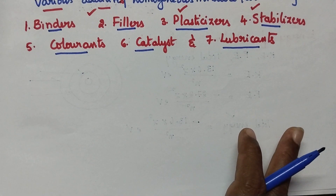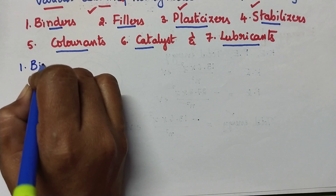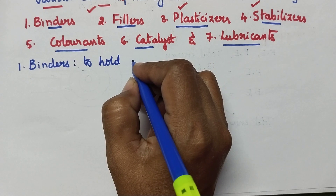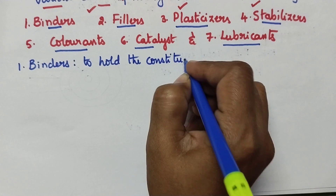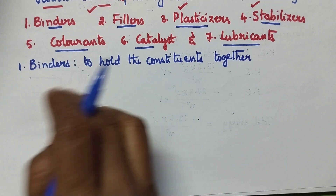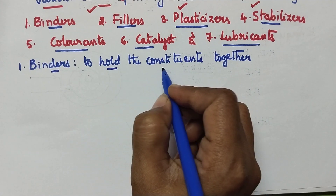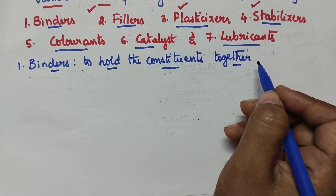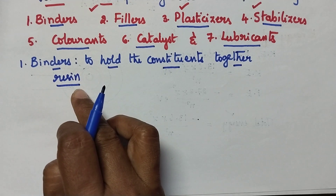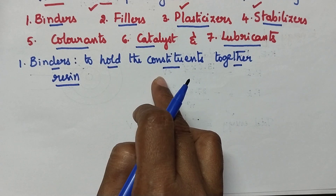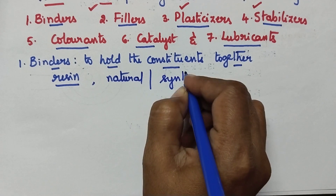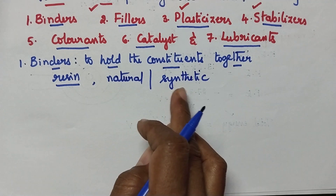Let us discuss about the importance of binders. The very purpose of a binder is to hold the constituents present in the plastic together, resulting in the formation of a homogeneous mixture. In other words, a binder can be called a resin — it is capable of holding all the constituents present in the plastic together. These binders may be natural or synthetic.